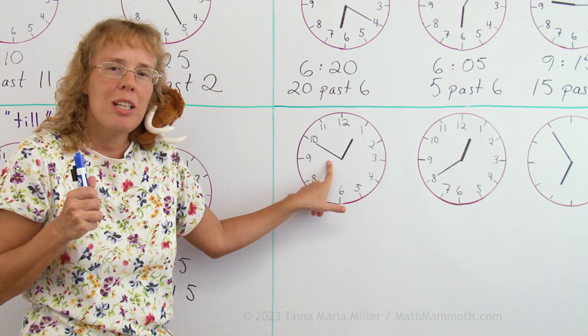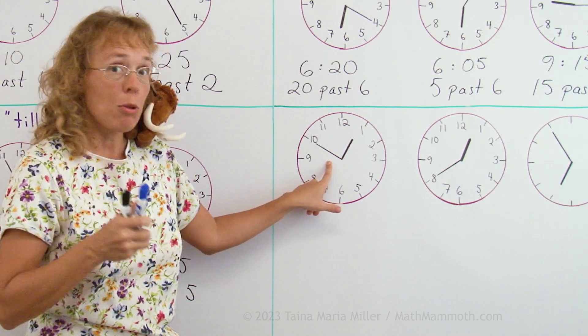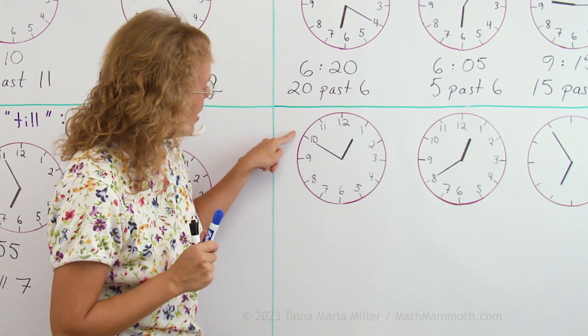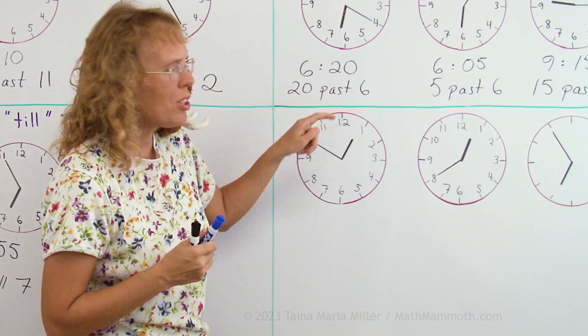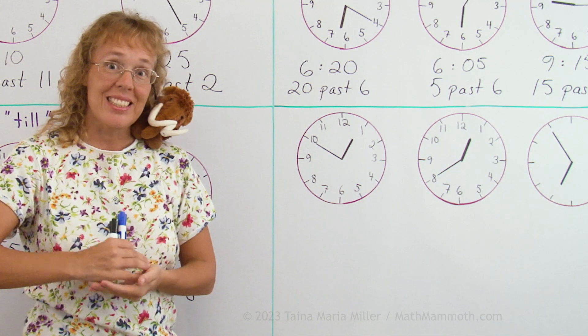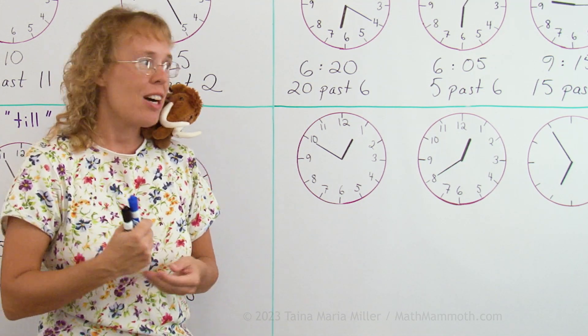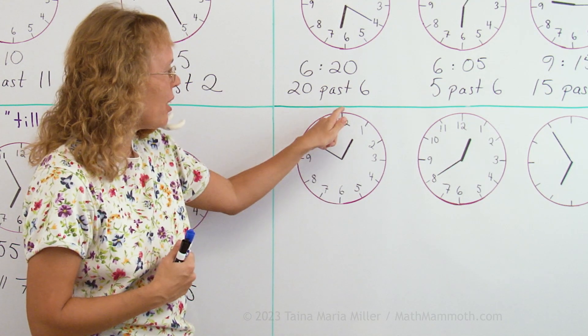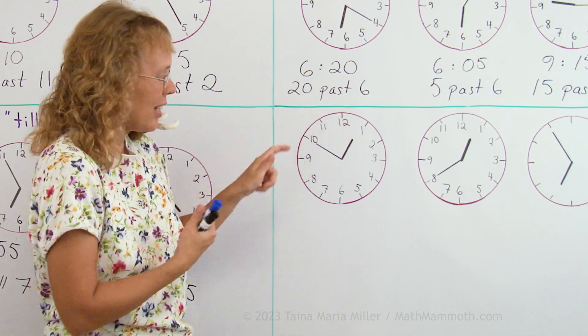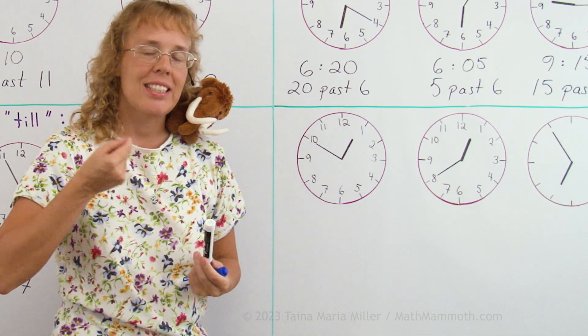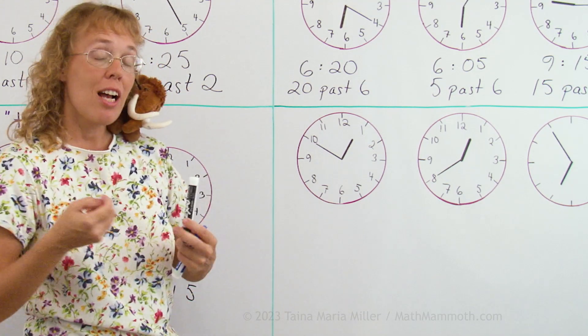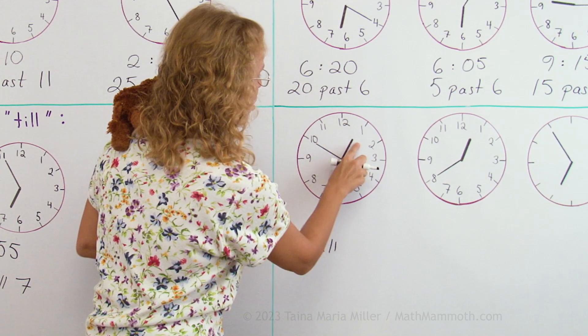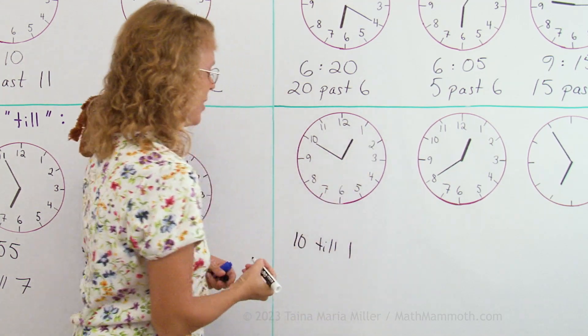Here's the minute hand. How many minutes till the next whole hour? And what is the next whole hour? Okay, the minute hand needs to move two steps, so to speak. So that makes 10 minutes because you count by fives. 5 and 10. Or you can count from here, 5 and 10, either way. So 10 minutes till... But what is the next whole hour? The hour hand is almost coming to 1, so it is 1. 10 till 1.